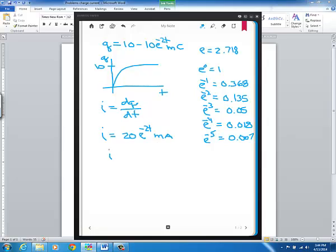And then we're asked specifically what the current is at half a second. So now if we evaluate this expression right here at t equals to a half, we're going to get that the current is equal to 20 e to the minus 1.